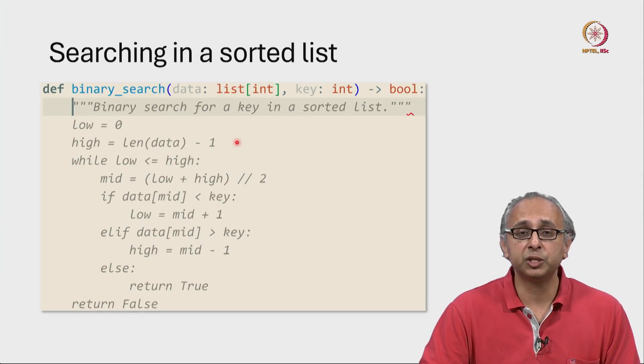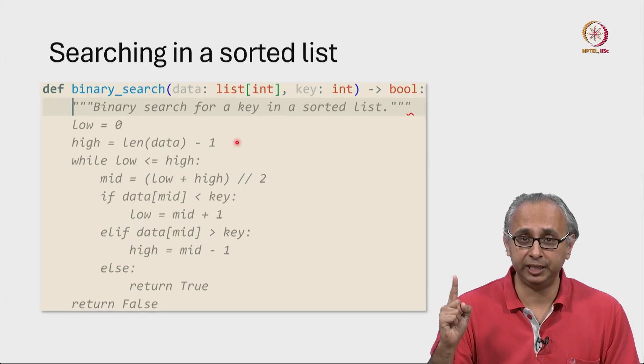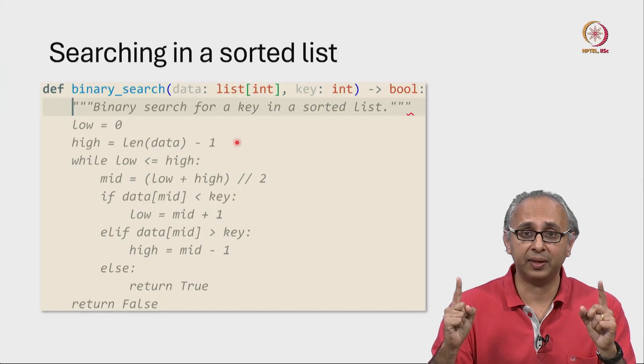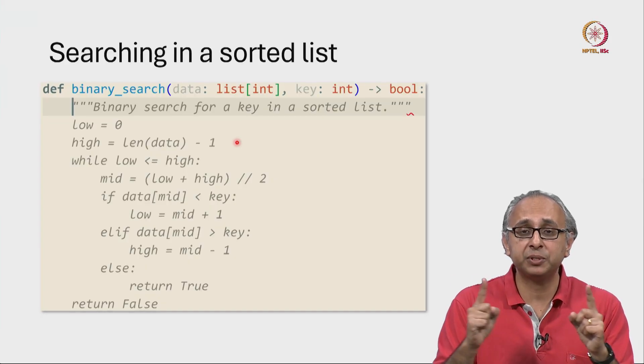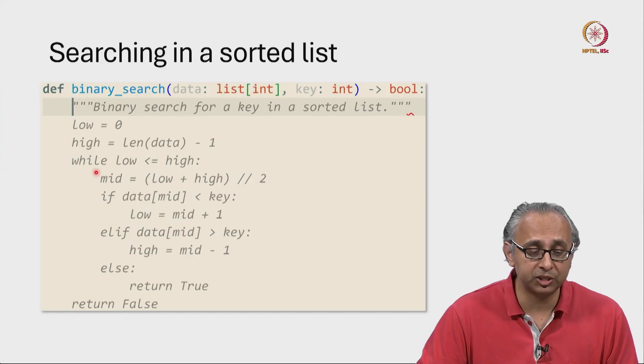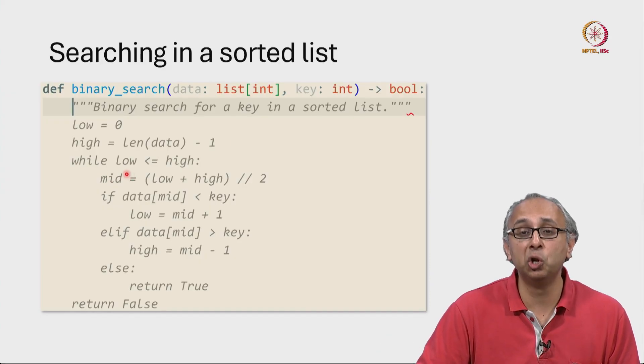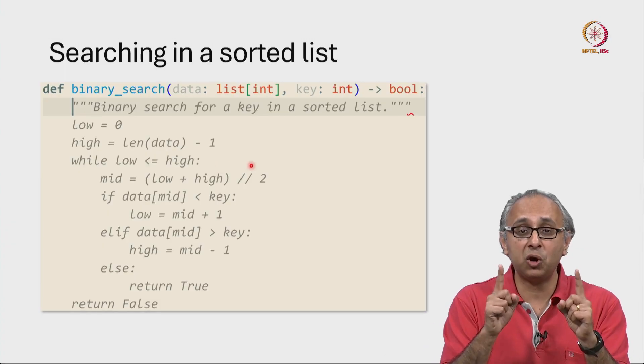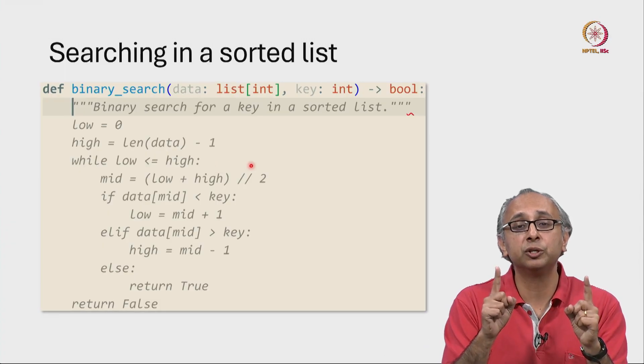Now what we are going to do is keep track of the low index and the high index and keep searching in this intermediate region. So our while condition is as long as low is less than or equal to high. That means as long as there is some region to search for.